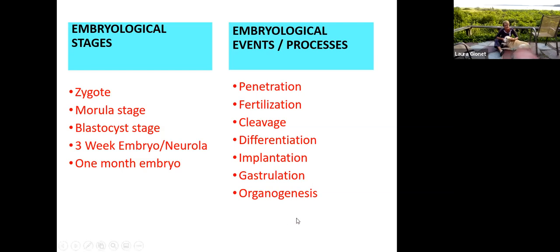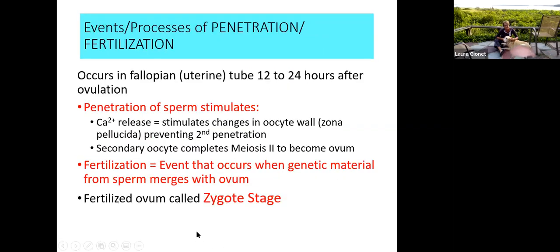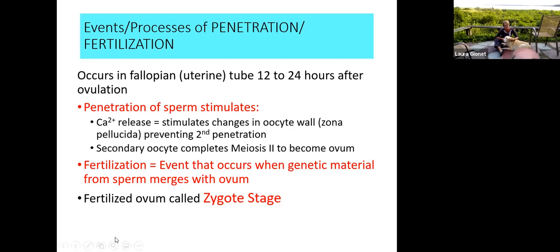The processes occur in this order: penetration, fertilization, cleavage, differentiation, implantation, gastrulation, and organogenesis. The first thing that happens is penetration followed by fertilization. This occurs in the fallopian tubes about 12 to 24 hours after ovulation, not far from the fimbria — about a quarter to a third of the way down the fallopian tube — that's where you want fertilization to optimally occur.